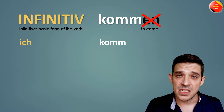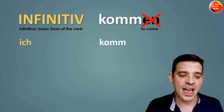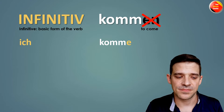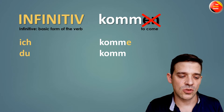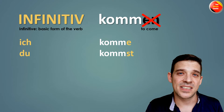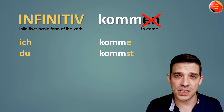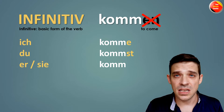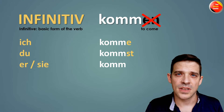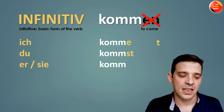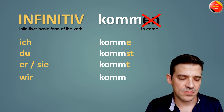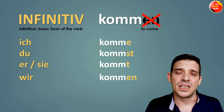So you have 'Ich' — you take the base 'komm' and you add an 'e': Ich komme. For 'Du', you take the base 'komm' and you add '-st': Du kommst. Next one is 'Er oder Sie' — He or She. Again the base 'komm' and you add '-t': Er/sie kommt. For 'Wir', you add '-en': Wir kommen.